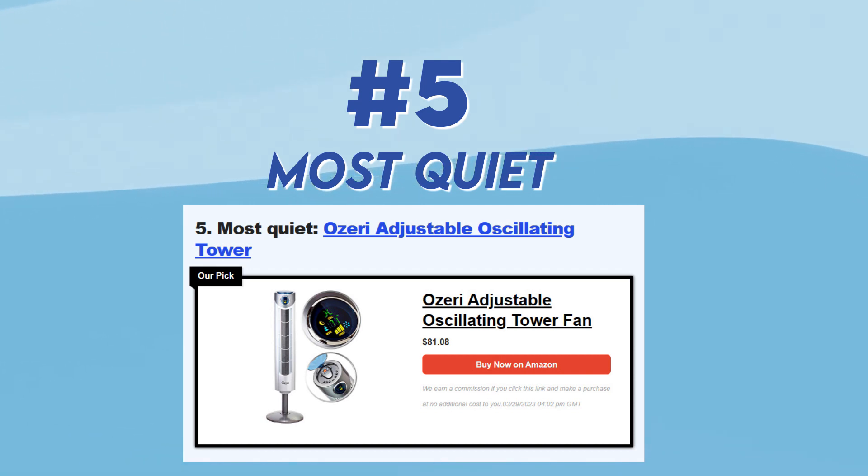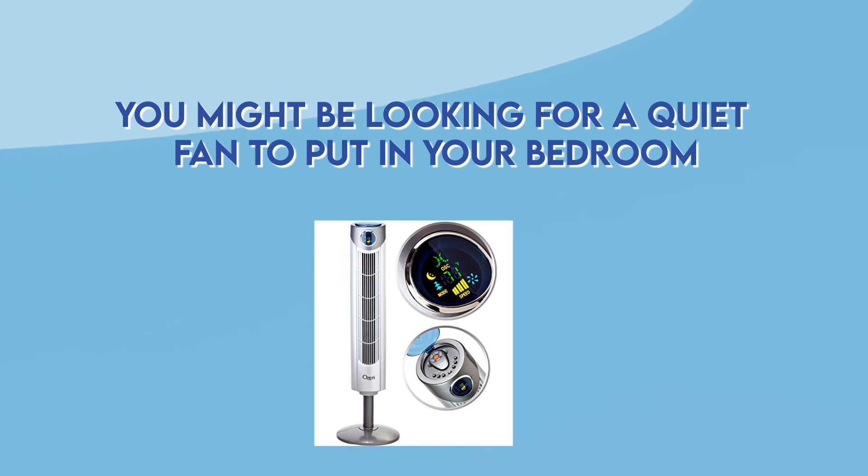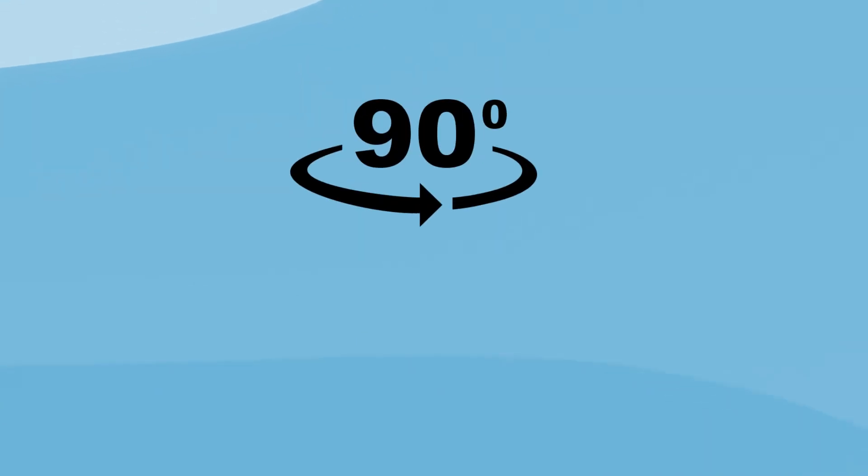Fifth is our most quiet option. Again, another tower fan. So you might be looking for a quiet fan to put in your bedroom, well, this is definitely a great choice for you. It has a free whisper quiet speed setting with a 90 degree oscillation for optimal air circulation.